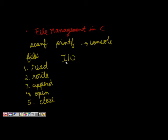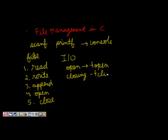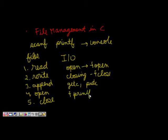We will look at some of the major functions. For opening a file, we have fopen. For closing the file, we use fclose. Then getc and putc — these are for writing and reading characters. fprintf and fscanf — these are for writing and reading different data types into the files.